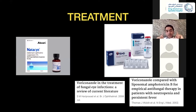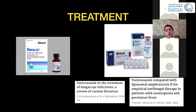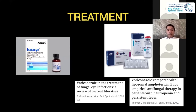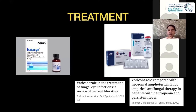The only FDA-approved medication for fungal keratitis is natamycin 5%. Previously, doctors were using amphotericin B at 0.15 or 0.3%. The advantage of natamycin being commercially available means you don't need access to a compounding pharmacy. Voriconazole became popular because of studies showing excellent ocular penetration and in vitro effectiveness against most fungi that cause keratitis, so clinicians started using it widely.